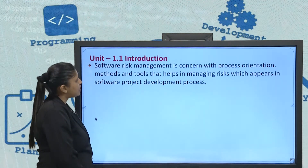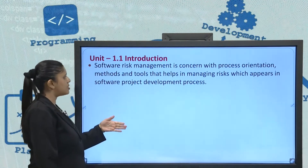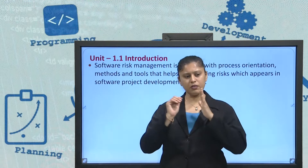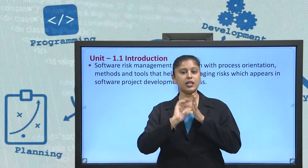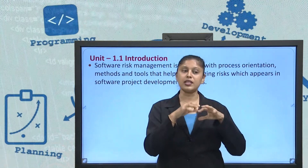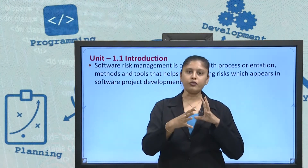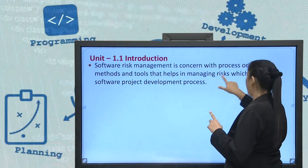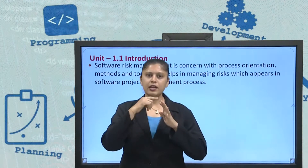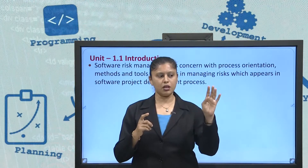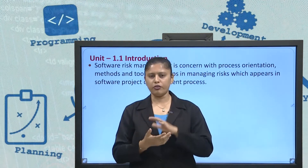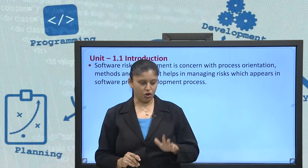Software Risk Management is concerned with process orientation methods and tools that help in managing the risk. From the name itself, it says that whatever risk comes across in my software development — till my software implementation, the planning phase, the analysis phase, everywhere — wherever the risk is associated, I manage that particular software risk. So, in order to help manage my risk, I have Software Risk Management, which will appear in the Software Project Development Process.